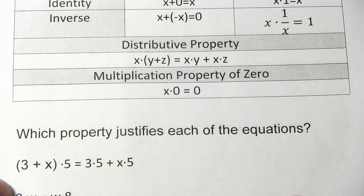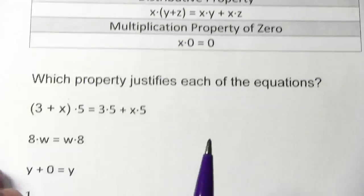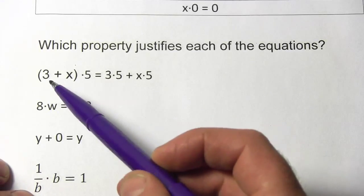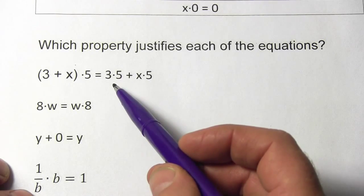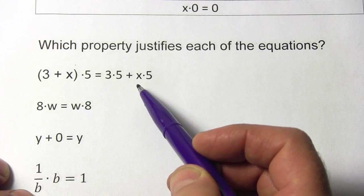So let's see if we can look at a few of these in the wild and identify them. So this first one, we have (3 plus x) times 5 equals 3 times 5 plus x times 5.